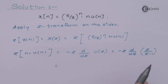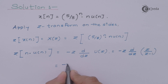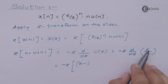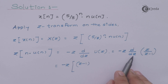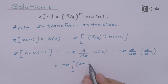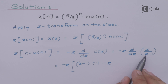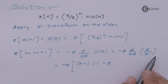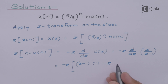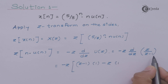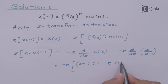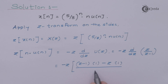Here u = z and v = (z−1). Writing v first: differentiation of z with respect to z gives 1. So d/dz of z = 1, minus u which is z, times the differentiation of (z−1). Differentiating z gives 1 and the derivative of the constant 1 is 0, so that term is 1. The denominator is (z−1) squared.